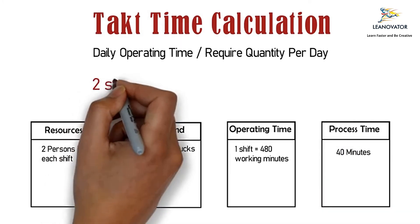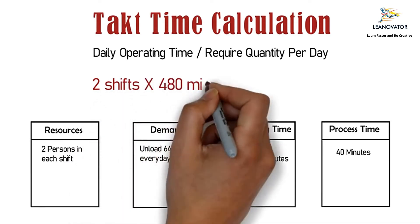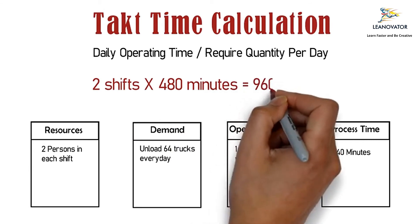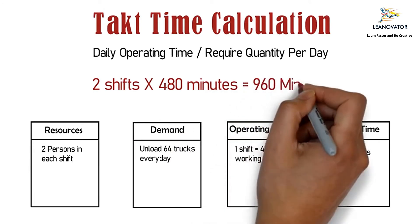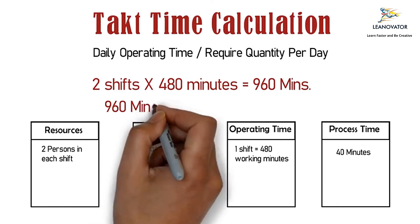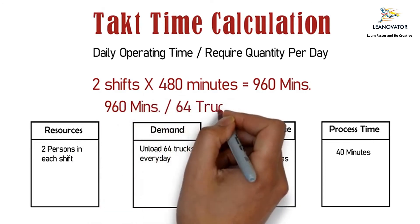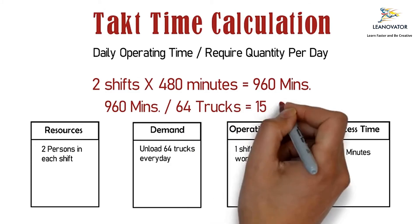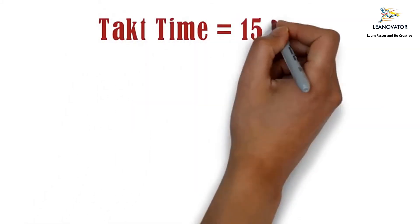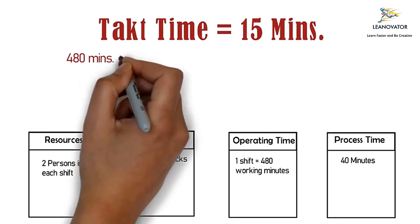To calculate the takt time, start by calculating the daily operating time, which would be 2 multiplied by 480 — because there are two shifts — which comes to 960 minutes. Now we divide 960 minutes by 64 trucks, which is our demand. This comes to 15 minutes, which we call takt time. So takt time is 15 minutes.